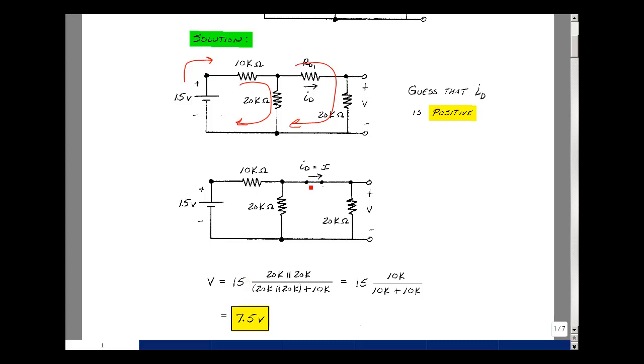And when you do that, you actually lose the current in this diode, but that's okay. If I can find this voltage, I can work backwards and get the current.